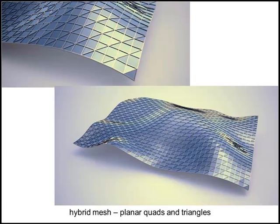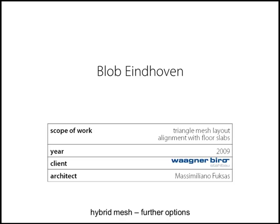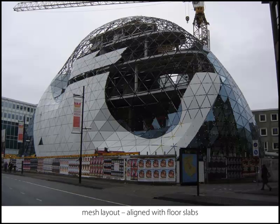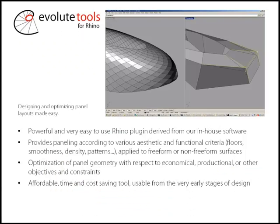Next is the Museum of Islamic Arts at the Louvre. The task here was to produce this flying carpet-like shape from flat panels of glass. Because the shape had a lot of curvature, we had to create a hybrid mesh consisting of triangles and quads in order to get the quads planar. Here are some renderings. We also have the Eindhoven blob, where the task was to align some seams along the floor slabs and improve the panelization with respect to density and layout.